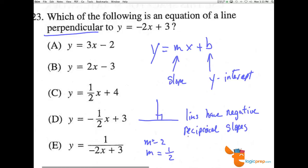So C has 1 half x plus 4. This will be our answer. It has nothing to do with the y-intercept. If we were to graph this, we can do so quickly.